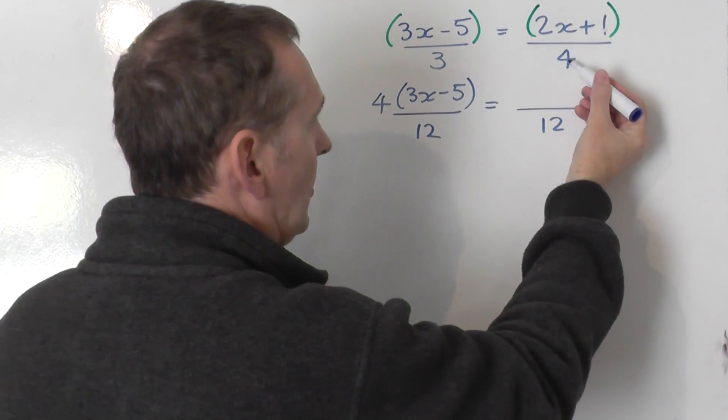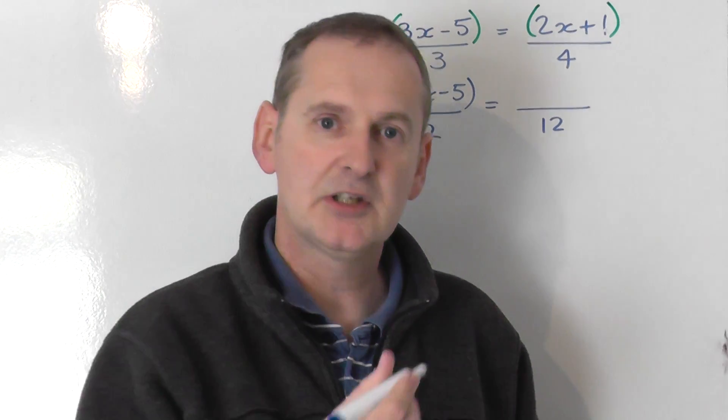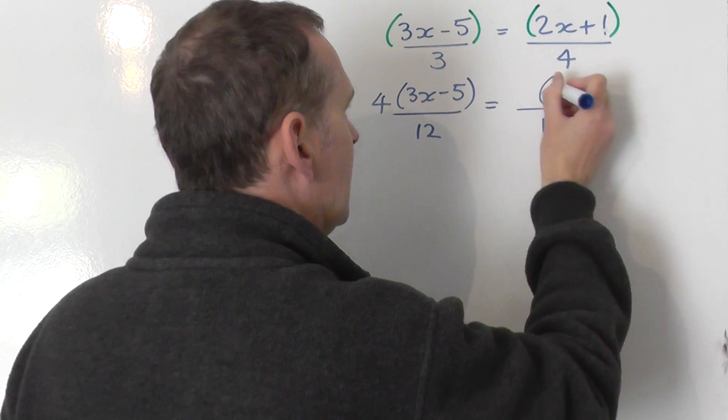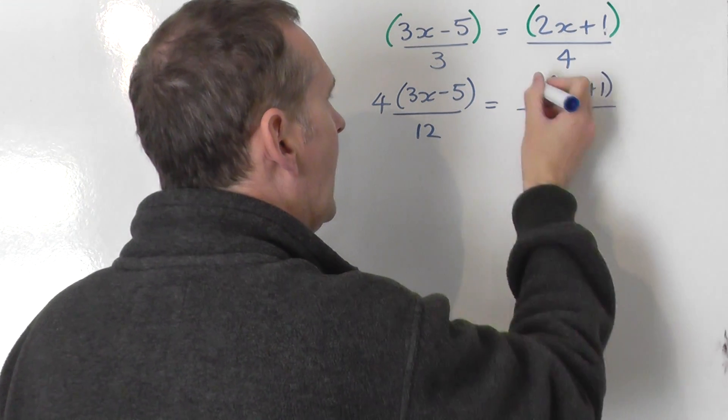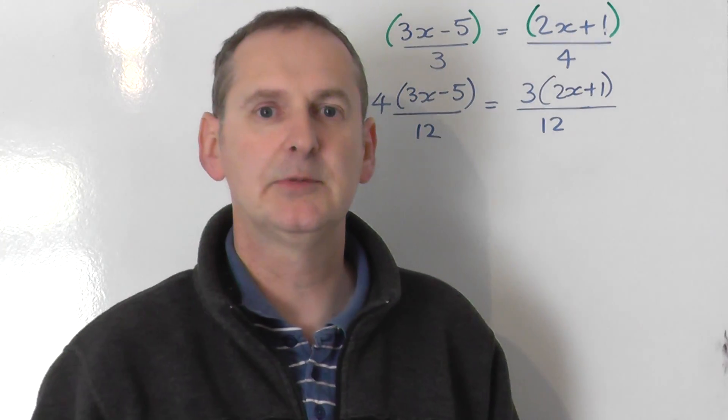Next, that 4 there needs to be turned into a 12 by multiplying by 3. So multiply the bottom by 3, I multiply the top by 3. So I take the 2x plus 1 on the top and I must treble it, so I put a 3 in front of it. Three lots of the bracket.